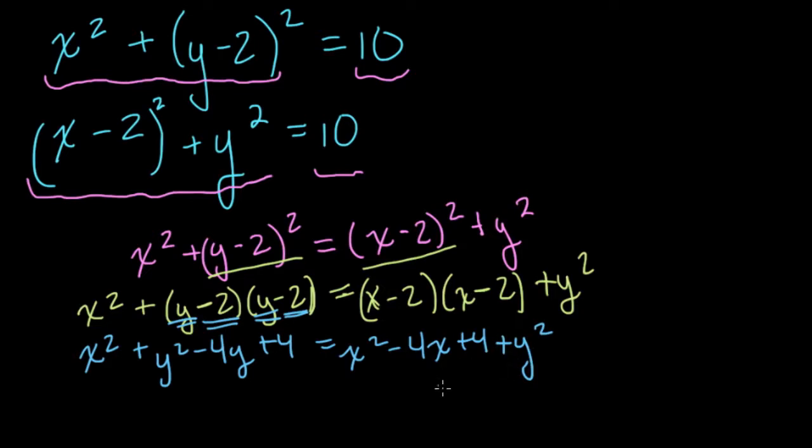Now to simplify, the first thing I would do is subtract y squared from both sides. The next thing I might do is subtract x squared from both sides. Then I would subtract 4 from both sides. And then we have this statement: -4y equals -4x. And I would divide both sides by -4.